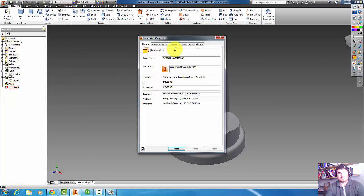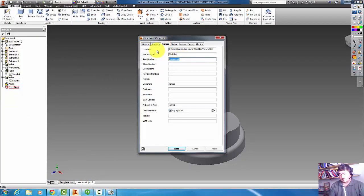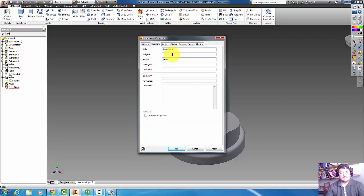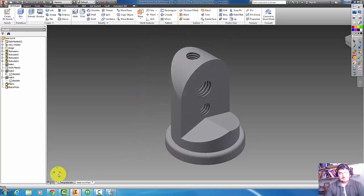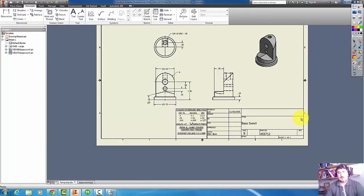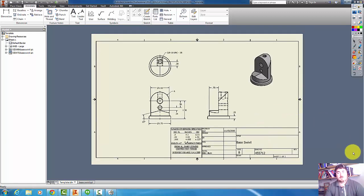If I go back to the part, go to my properties, part number, give it some part number, a description, put that in the title. Also on my title block, I have the subject mapped to the material. So I'll tell it's 6061. Come back here and it updates all that. So now this part is done. Hope that helps. Stay tuned for the next video.